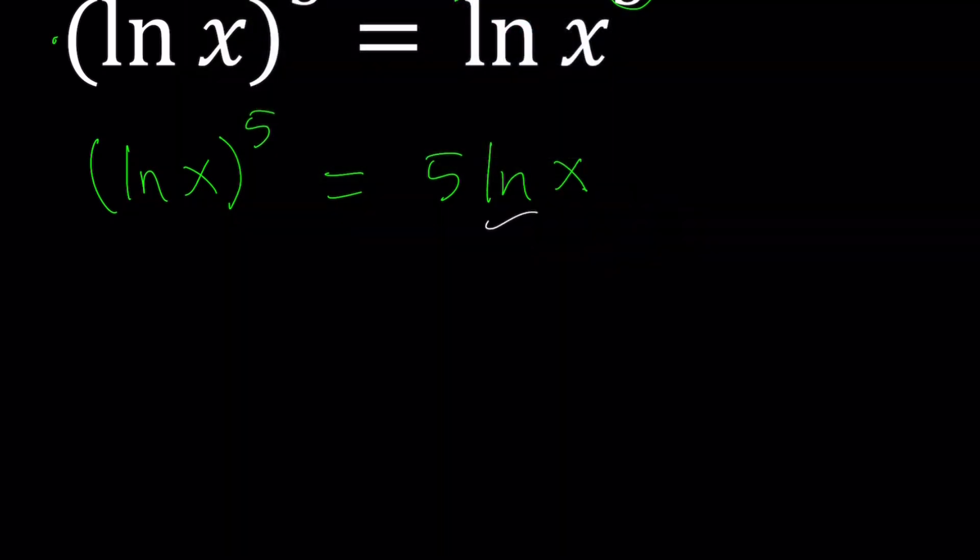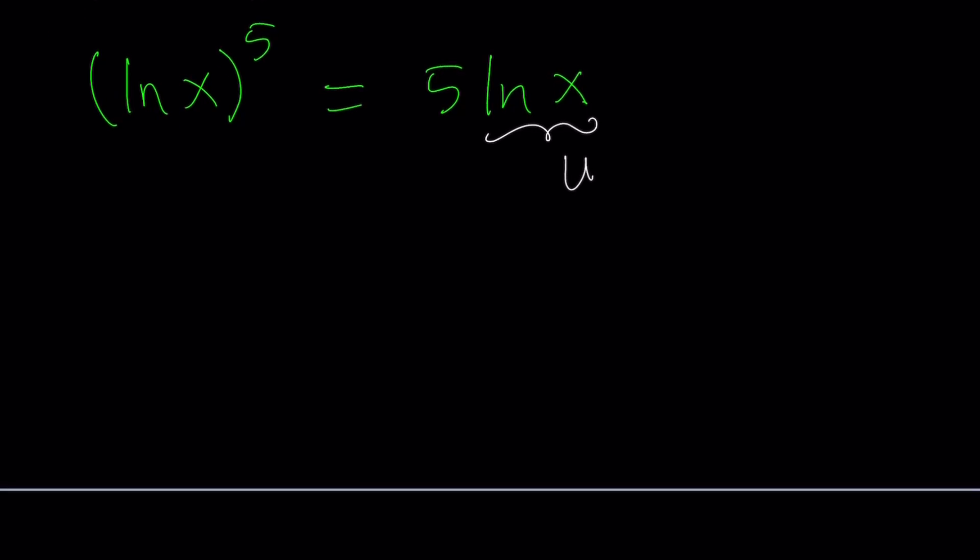Let's go ahead and replace ln x with something. How about u? That gives us u to the fifth power equals 5u. You can divide both sides by u as long as u does not equal 0. But let's not do that. Let's go ahead and put everything on the same side so we can solve for u.